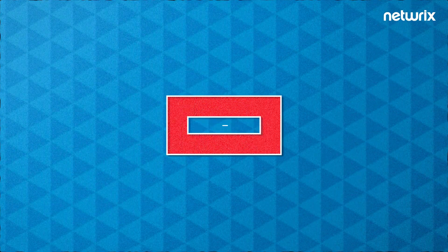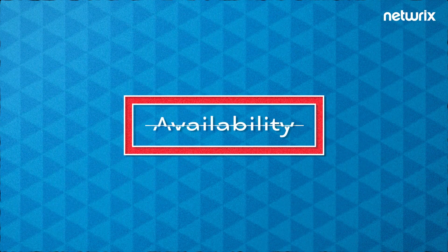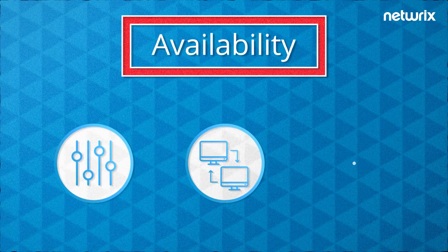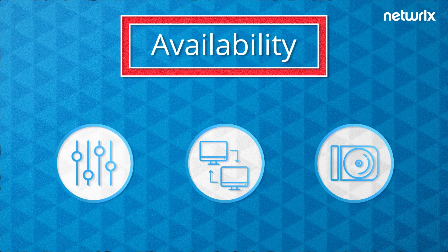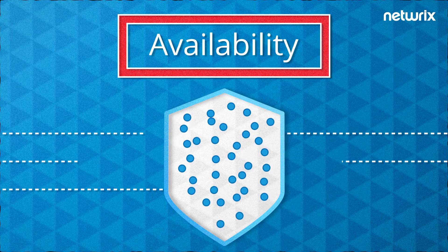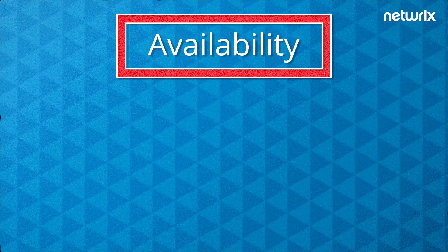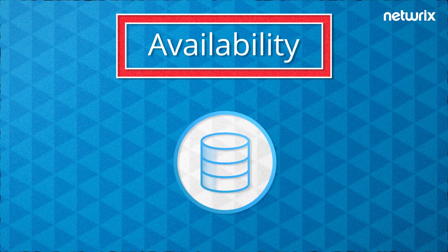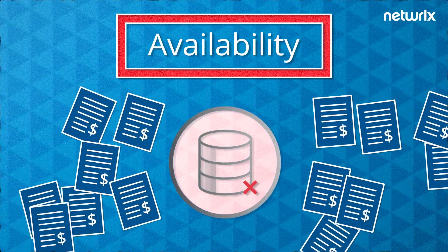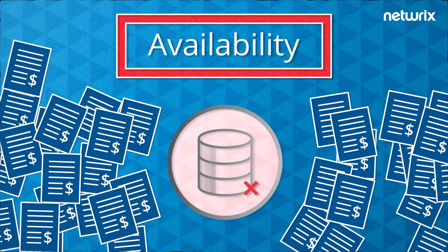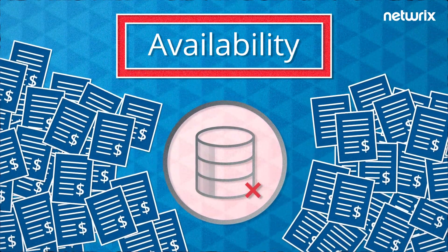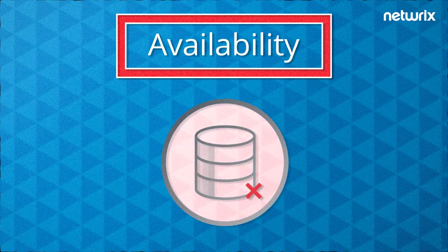The final component of the triad is availability. Security controls, systems, and software all have to work properly to ensure that information is available when needed. For example, if your financial database is offline, your accountants will be unable to send or pay invoices in time, which may lead to disruption of critical business processes.